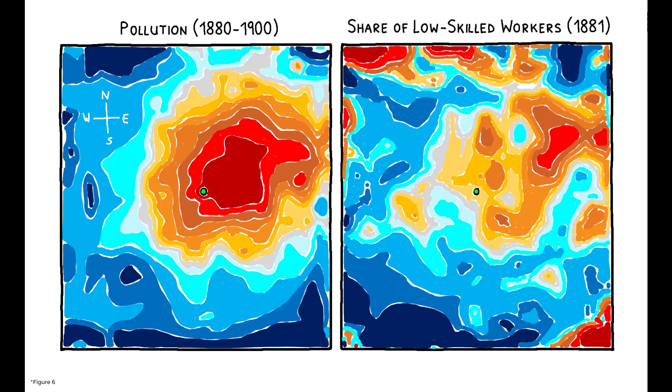On the right, we see a similar gradient. Eastern neighborhoods also have a high share of low-skilled workers, as measured in 1881. This suggests a link between pollution and neighborhood sorting, but there could be other explanations.